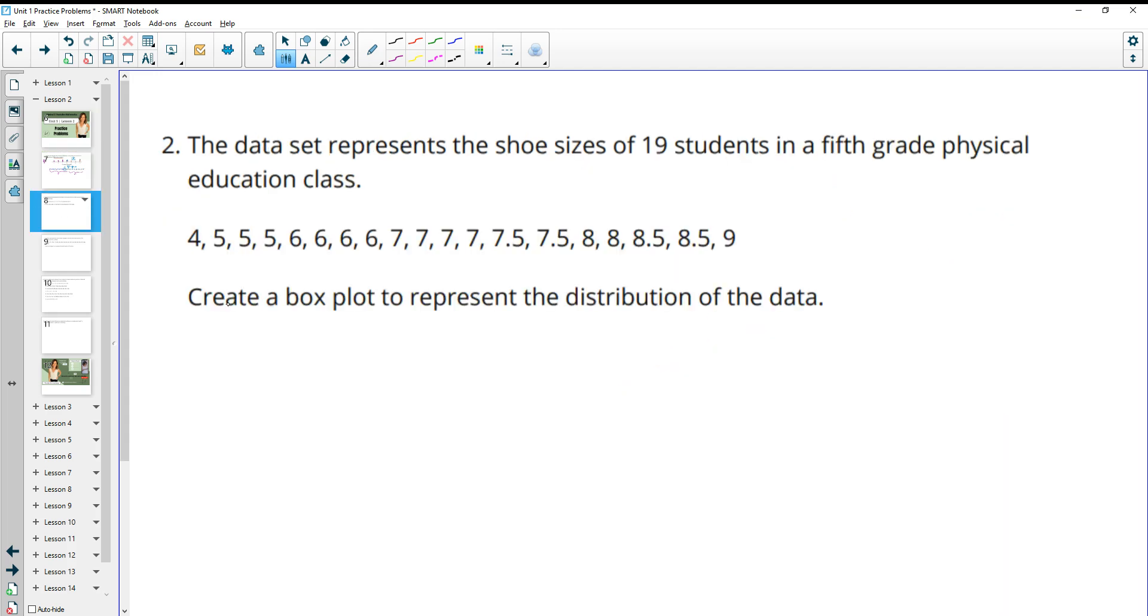Number 2 gives us a data set that represents the shoe sizes of 19 students in a fifth grade physical education class. Create a box plot to represent the distribution of this data. So for a box plot we need a five number summary: we need the minimum, we need our quartile 1, we need our median, we need our quartile 3, and we need our maximum.